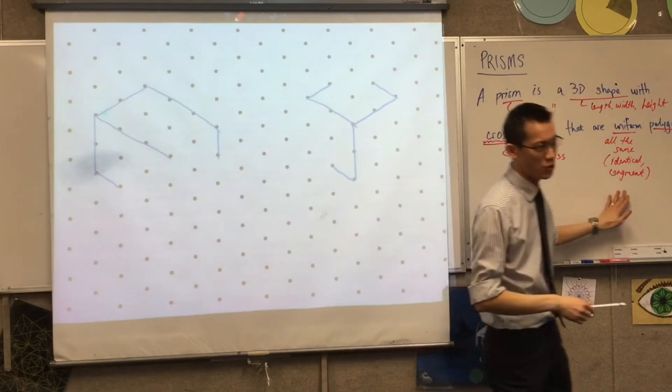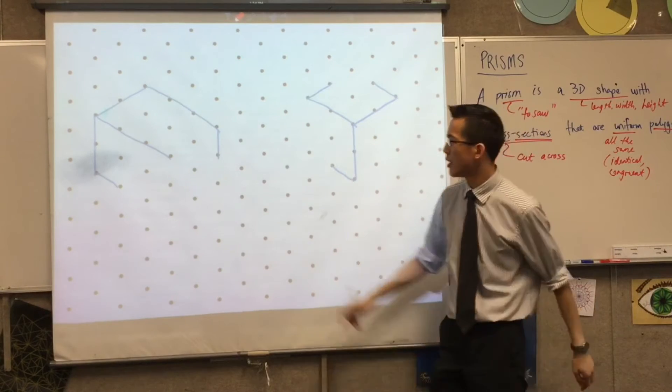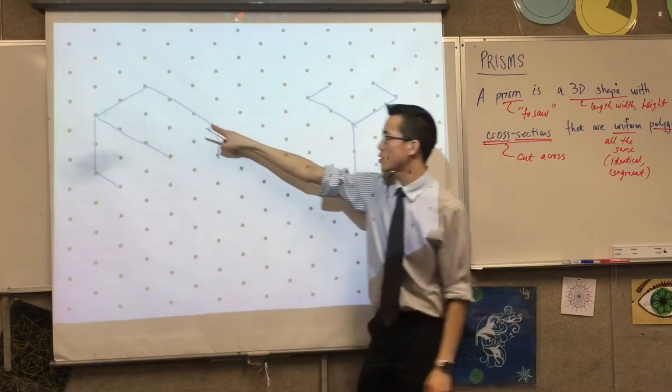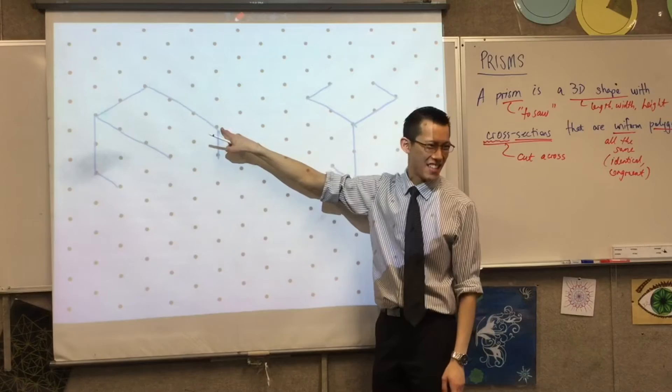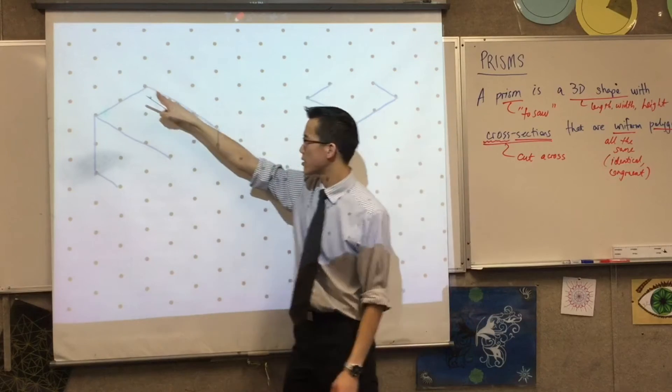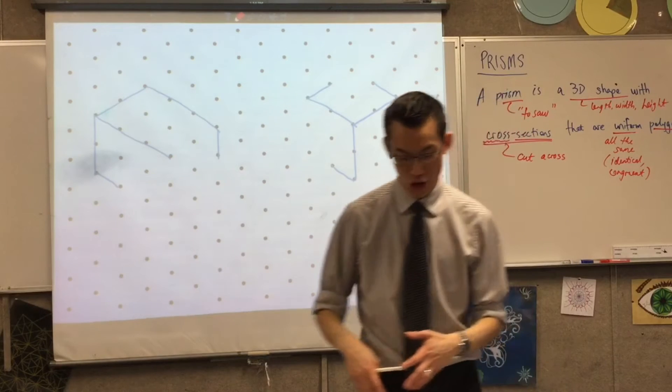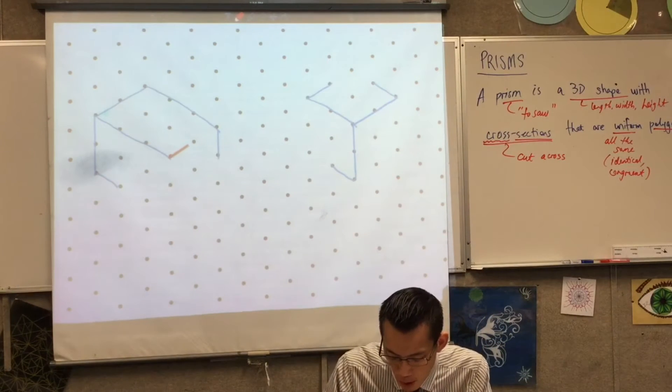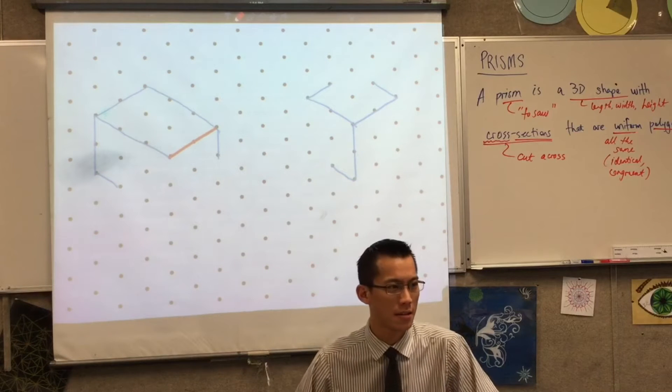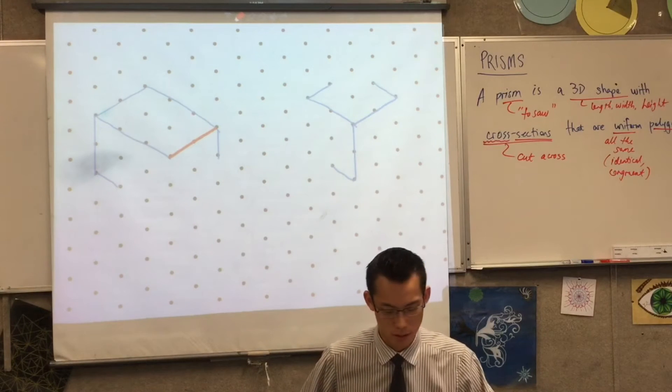Secondly, the cross sections ought to be uniform. So for instance, can you see how across this way, the edge ends? This edge ends and then it starts going down. Well, if that's the case, in order to keep it uniform, I have to have a corresponding edge over here. Otherwise, I'm not going to get uniform cross sections.